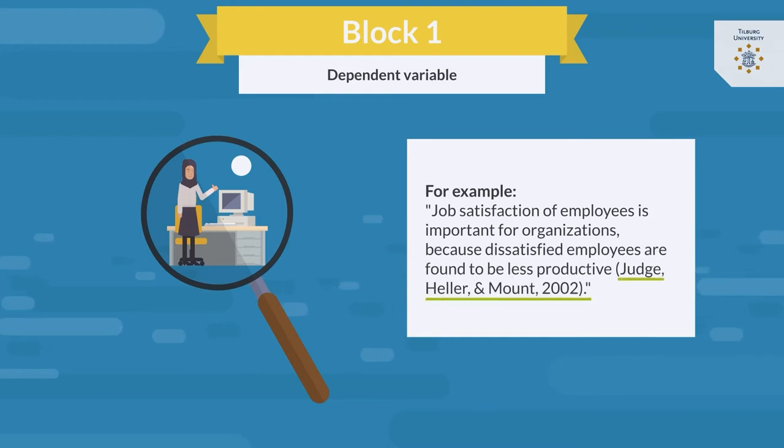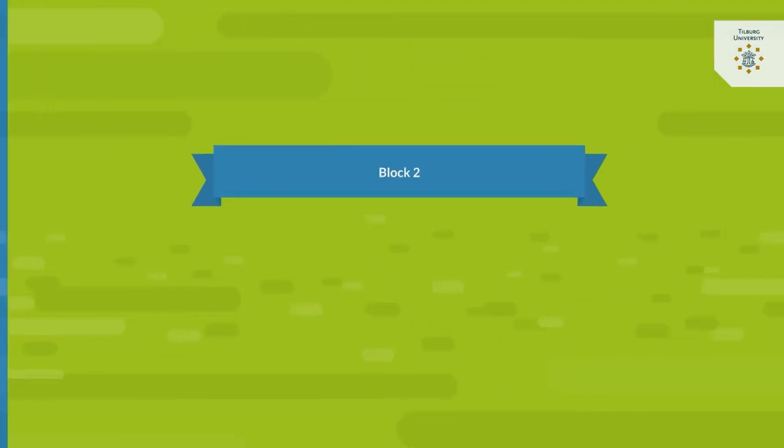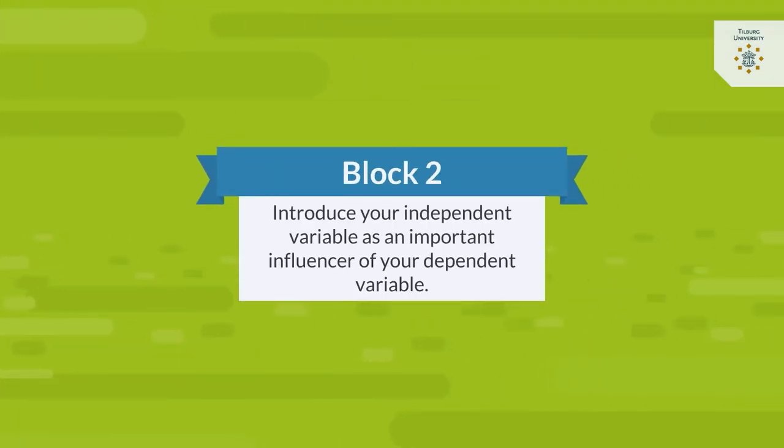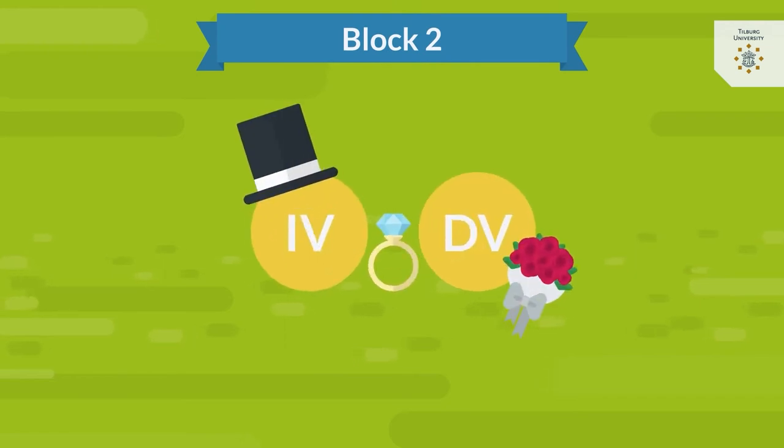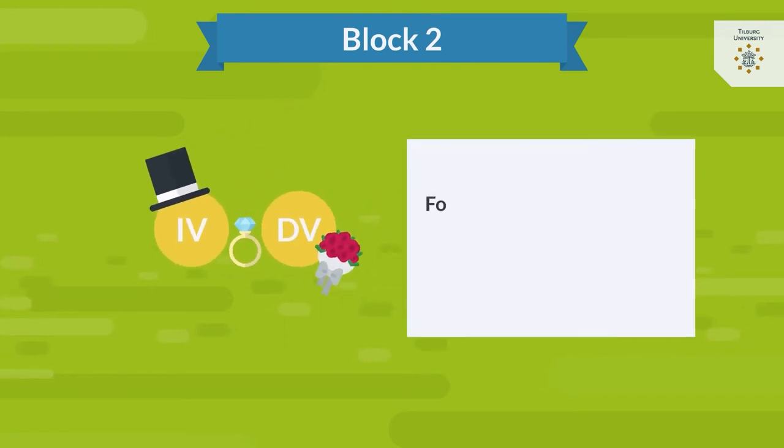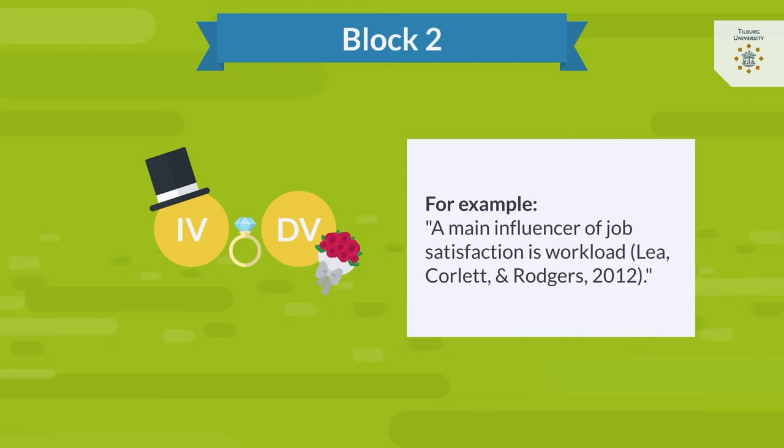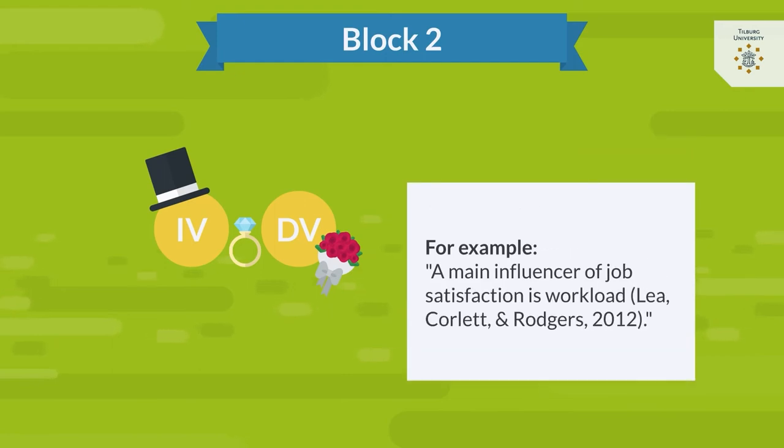Now let's move on to the second block. In this paragraph, you can introduce your independent variable as an important influencer of your dependent variable. You can do this by directly addressing the relationship between the two variables. For example, by writing 'a main influencer of job satisfaction is workload.'